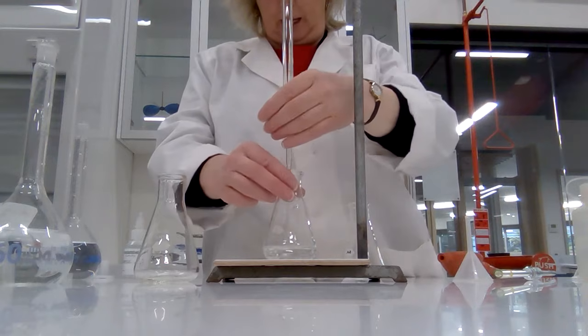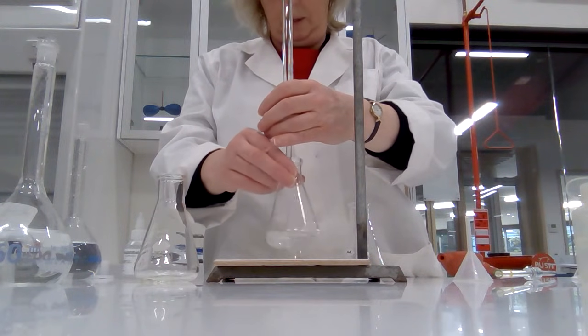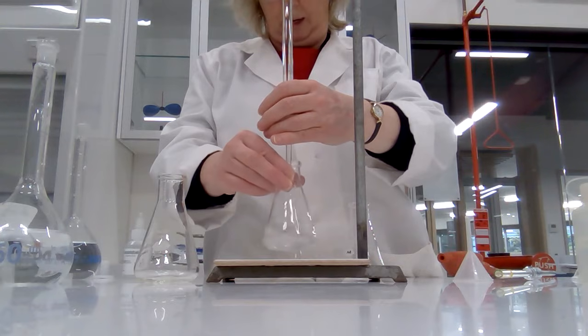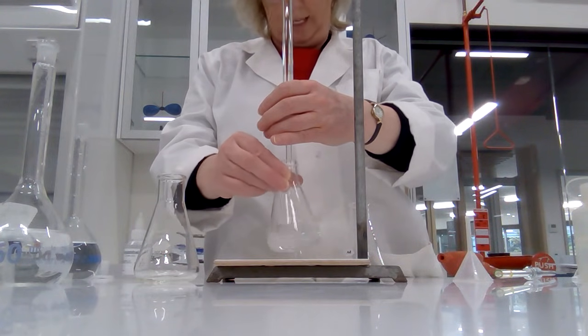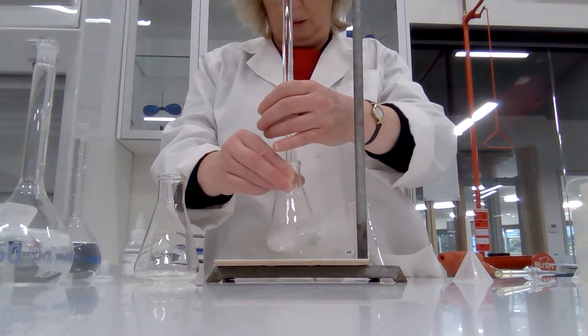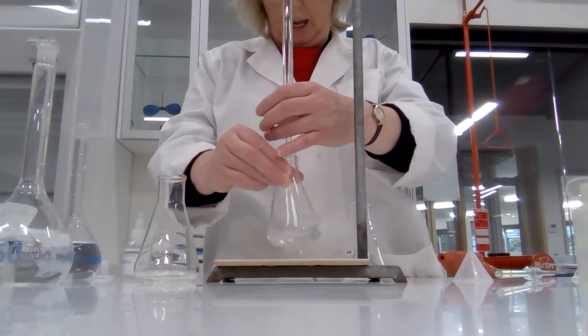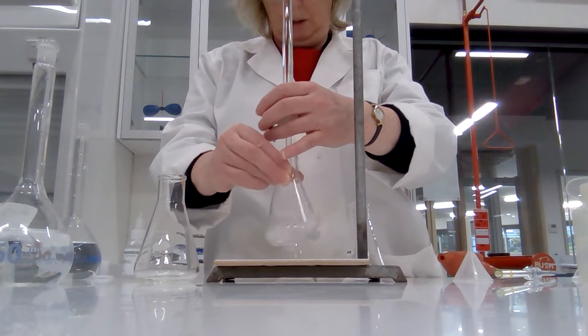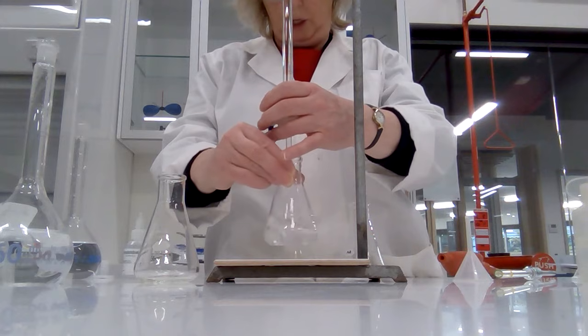Okay, let's see how we go. Take the funnel out and let's see what happens. So we're expecting the pink color of the phenolphthalein when it's basic, when we've got an excess of base. Looks like it's not going to be long. We're already getting a pink color in the flask. That's excellent. Everybody likes a quick titration.